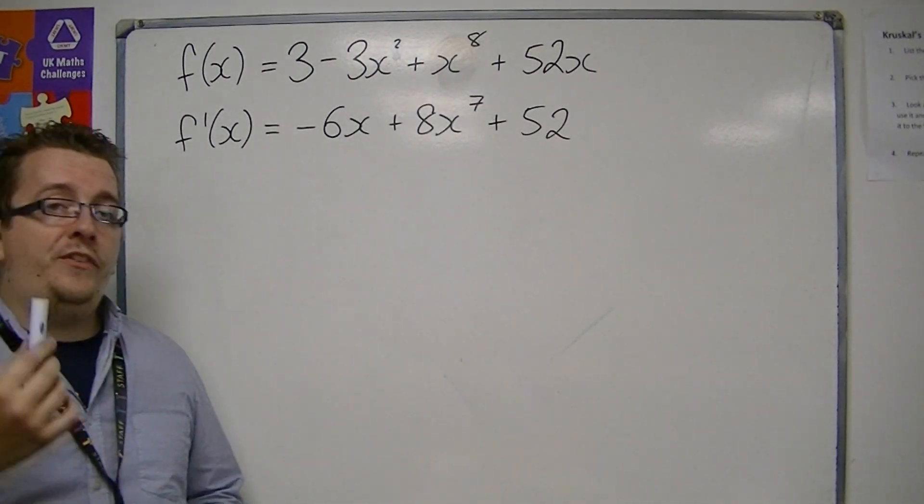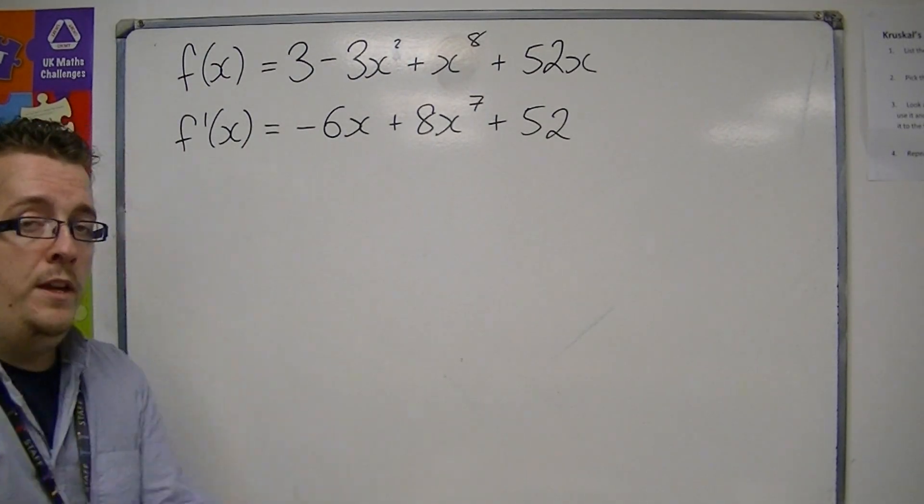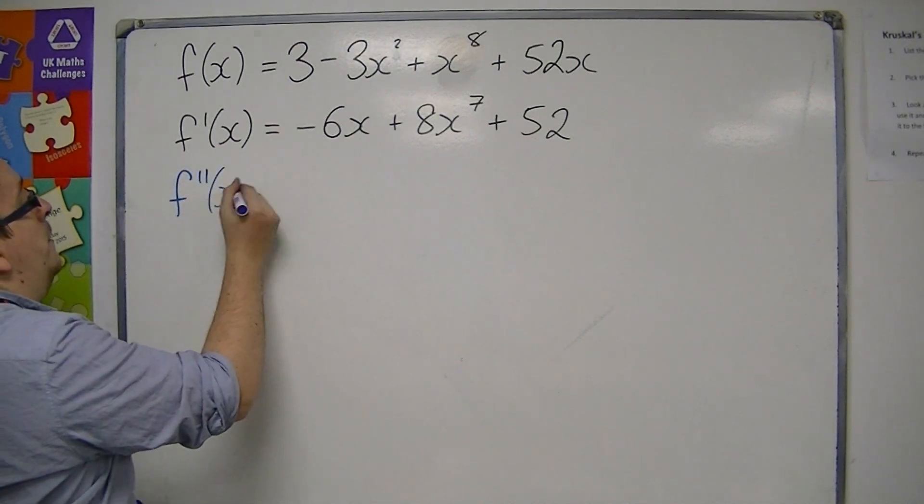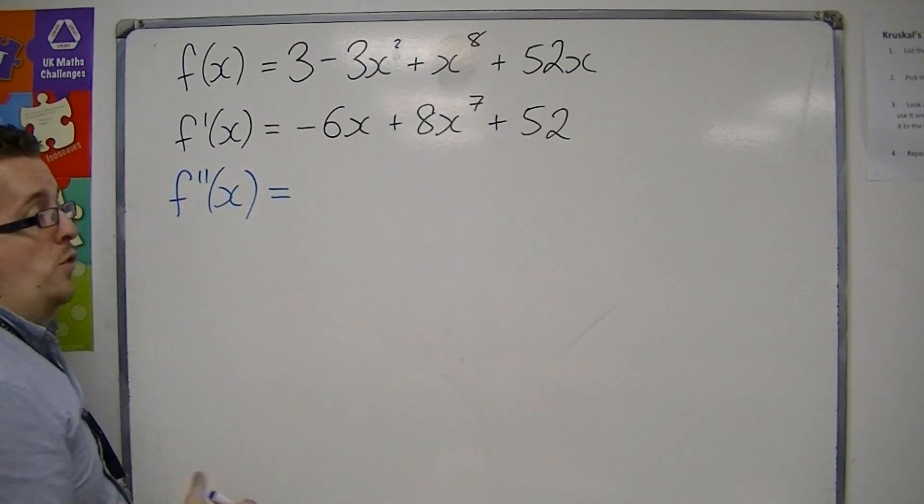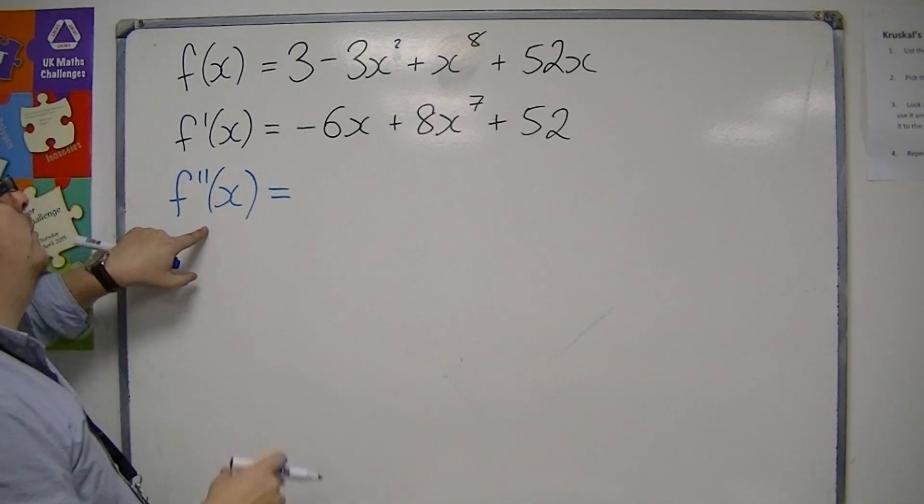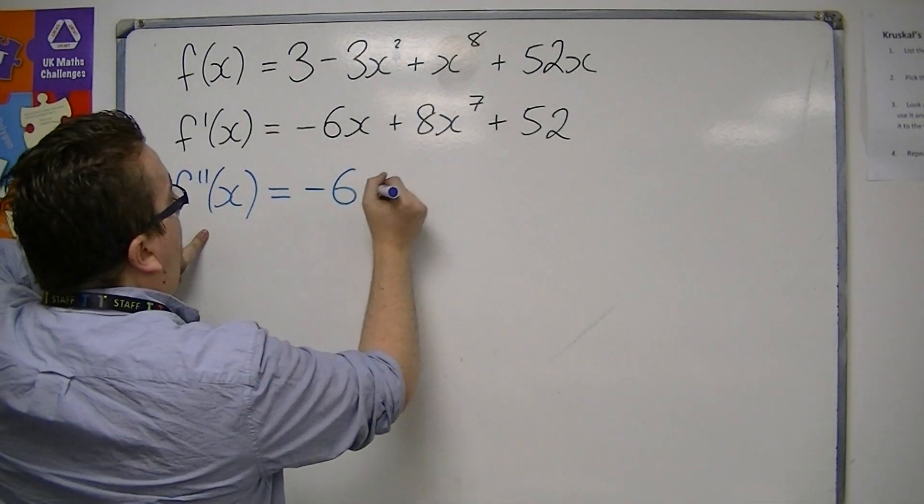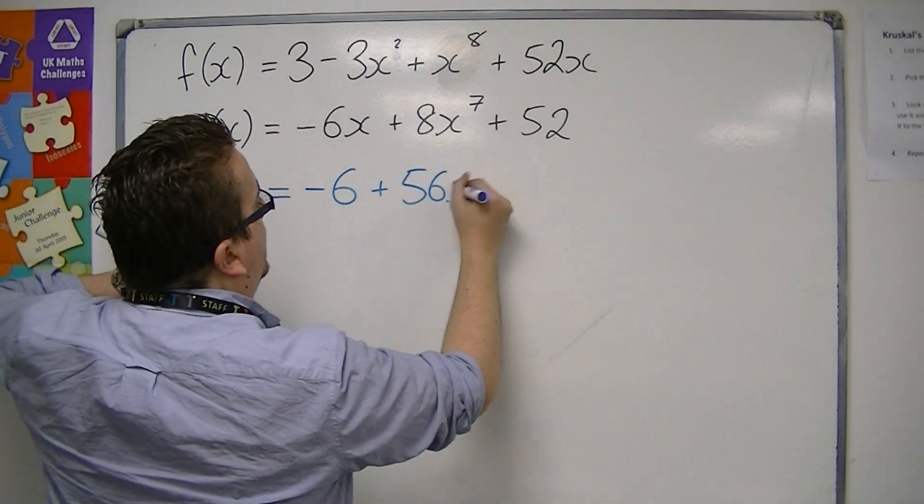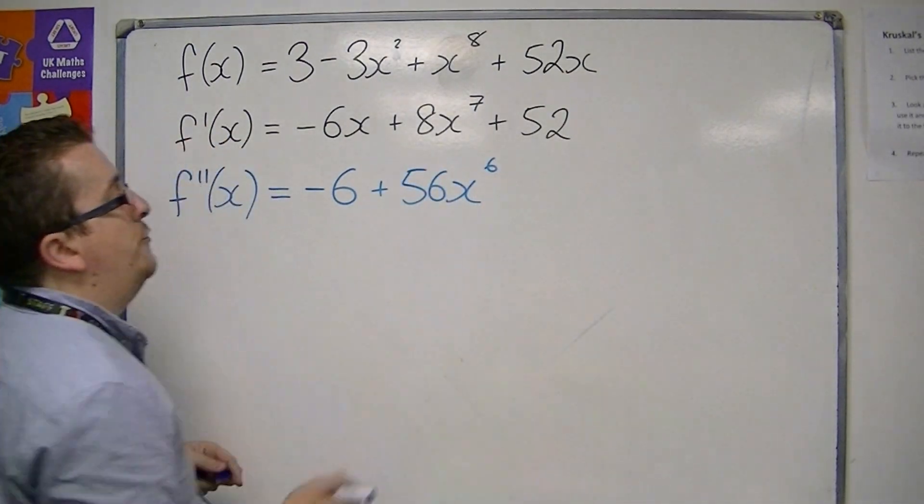Now if you're going to find the second derivative in function notation, we use f double prime. Rather than d2y by dx squared, we use f double prime, which would be minus 6 plus 56x to the 6, and the 52 differentiates to 0.